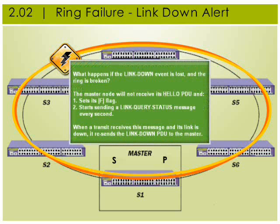What happens if a link down event is lost but the ring is broken? In this case the master will not receive its hello PDU and will set its F flag. The master then starts sending a link query status message every second to the transit nodes. When a transit node receives this message and its link is down, it resends the link down PDU to the master.